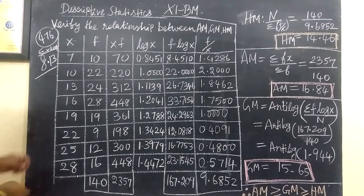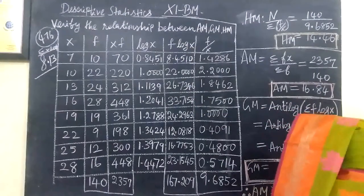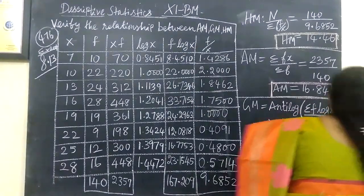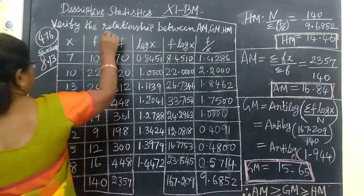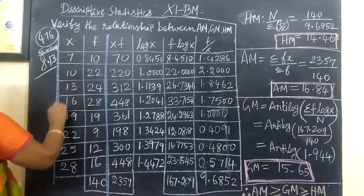The question gives us x and f values. These are the given values for the question.